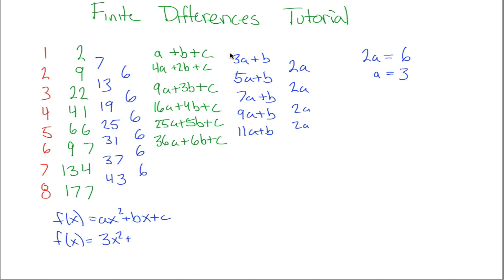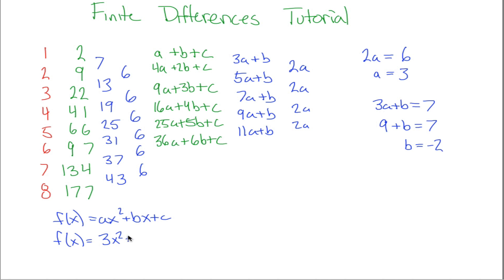Now take anything from the first-difference column. The top one is 3A+B, which corresponds to the number 7 in the original first differences. So 3A+B = 7. Since A=3, we get 3(3)+B = 7, meaning 9+B = 7, therefore B = -2.